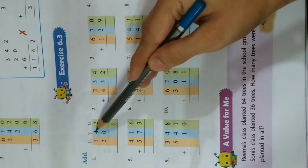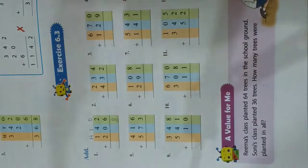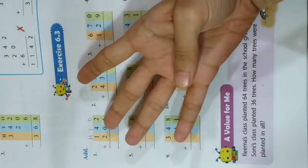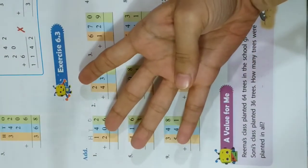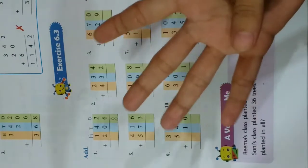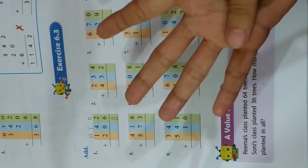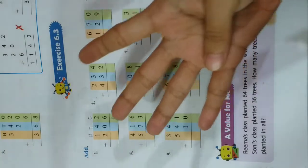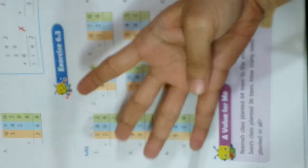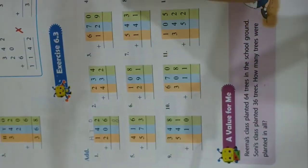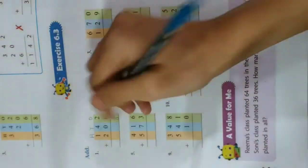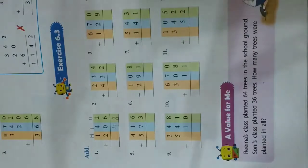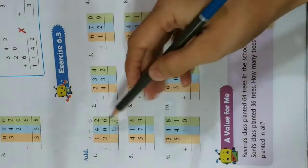Now at tens place, 4 is given on top and 0 is given below — that means nothing. 4 plus 0 is 4, so you only have 4. Write 4 over here.